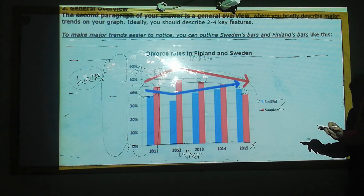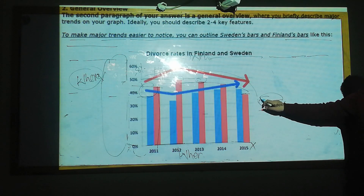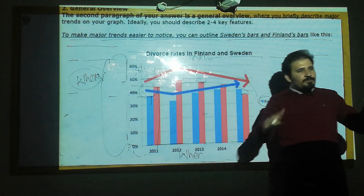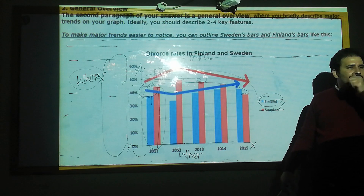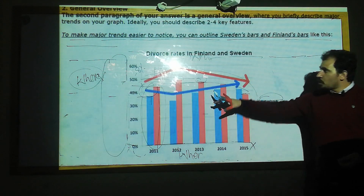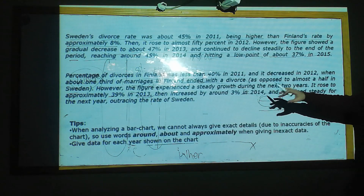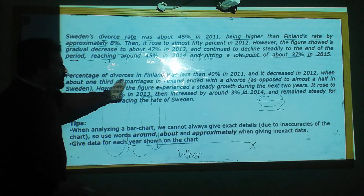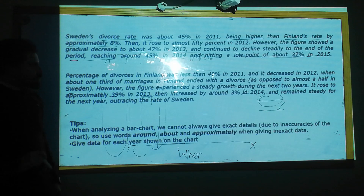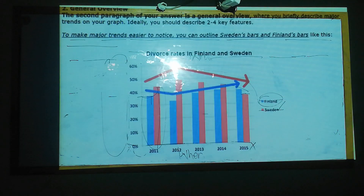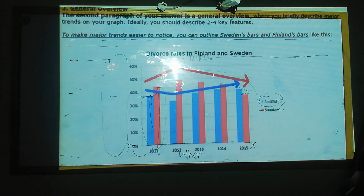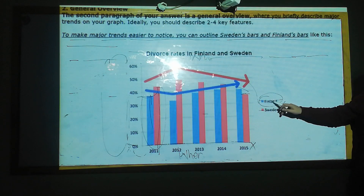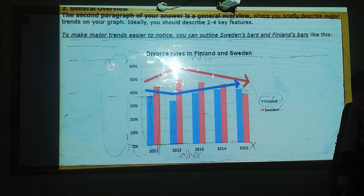Now we want to write about Finland — the blue line. In the beginning, we did a comparison, but later we did not talk about Finland because I'm going to write the next paragraph about it. In the second supporting paragraph: the percentage of divorces in Finland was less than 40% in 2011. In the first year, it's almost less than 40%.